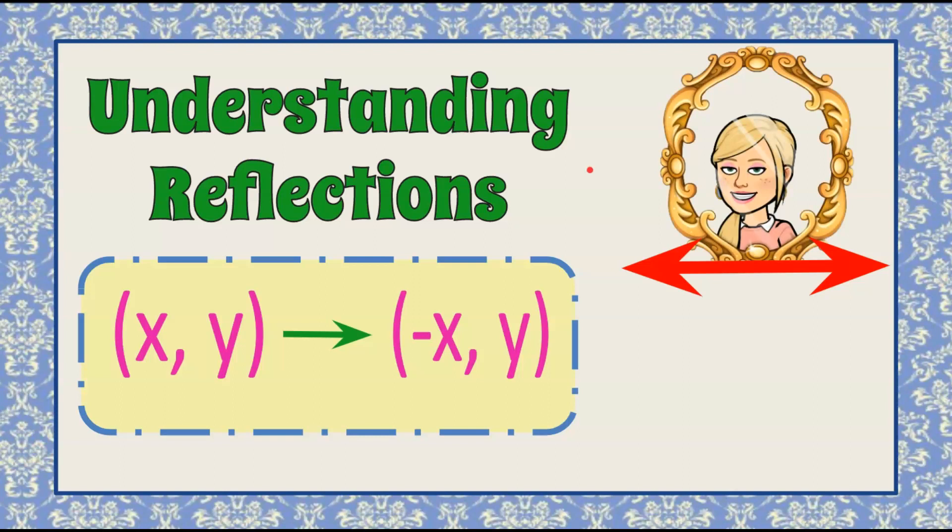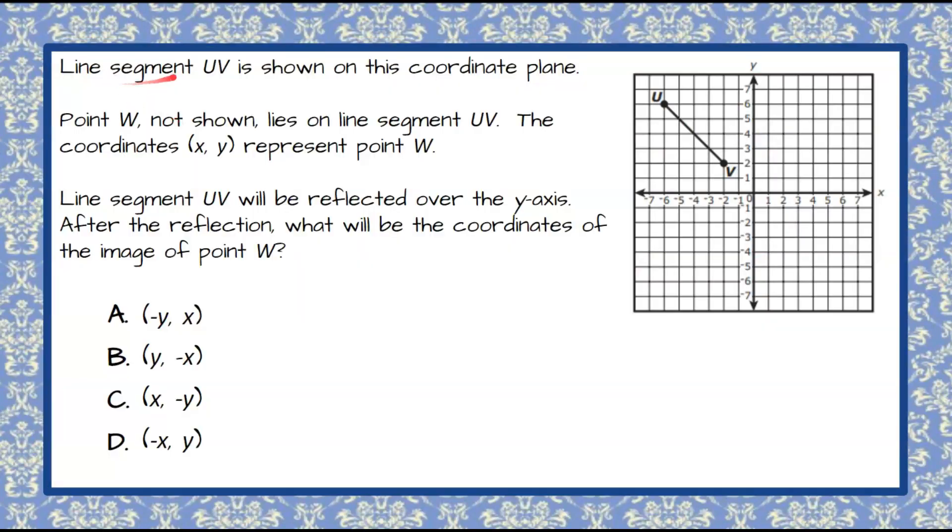Here is our problem for today. We are given line segment UV which is shown on this coordinate plane. Point W, not shown, lies on line segment UV. The coordinates (x, y) represent point W.